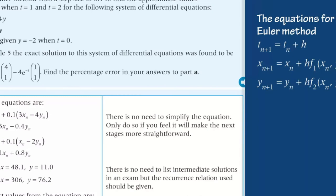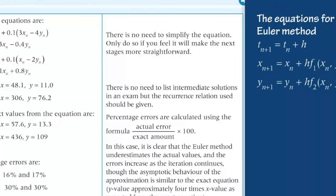In part b, you need to substitute the values for t equals 1 and t equals 2 into the exact solution given in the question. The percentage error is obtained by using the formula actual error over exact amount multiplied by 100. The results for the errors in x and y at t equals 1 and t equals 2 are then listed.